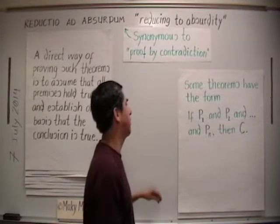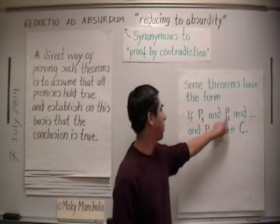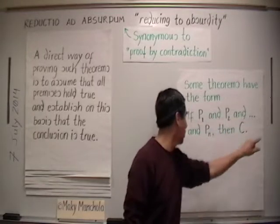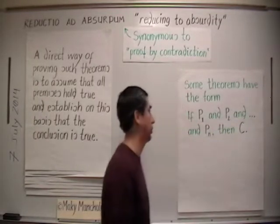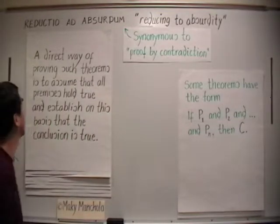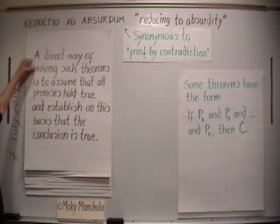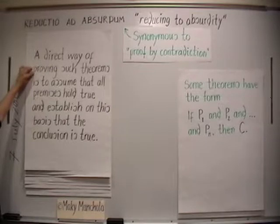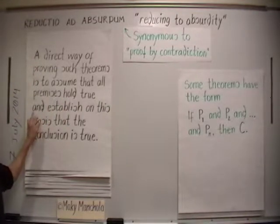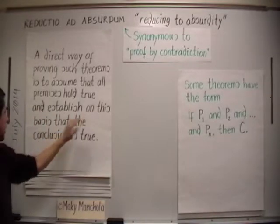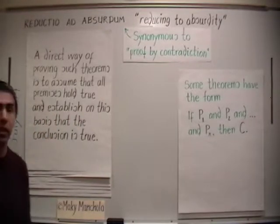Some theorems have the form: if premise 1 and premise 2 and so on and premise n, then conclusion. A direct way of proving such theorems is to assume that all premises hold true and establish on this basis that the conclusion is true.